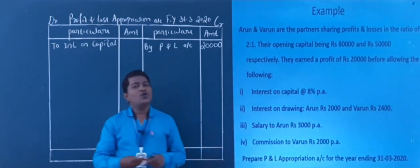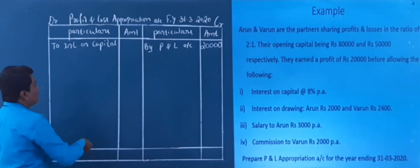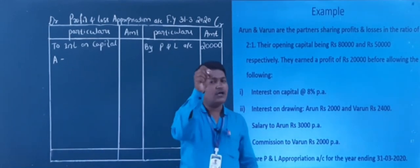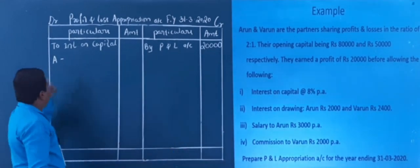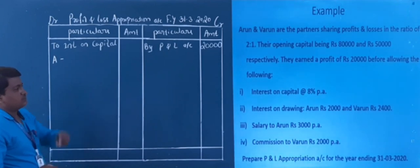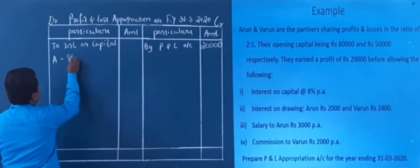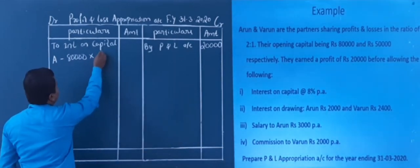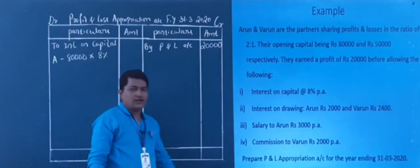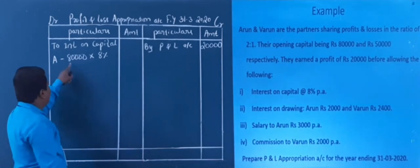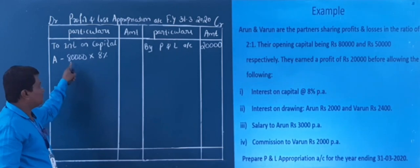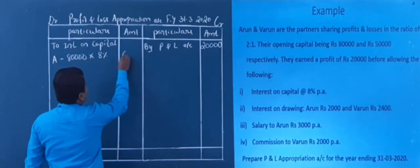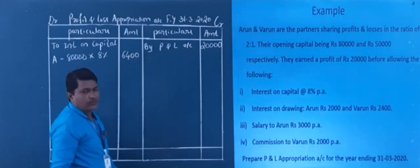Arun's interest on capital: 80,000 into 8% — that is, 80,000 into 8 divided by 100. The calculation gives 6,400. That is the interest on capital for Arun. Next, for Varun, the capital is 50,000. 50,000 into 8% gives 4,000. So Varun's interest on capital is 4,000.